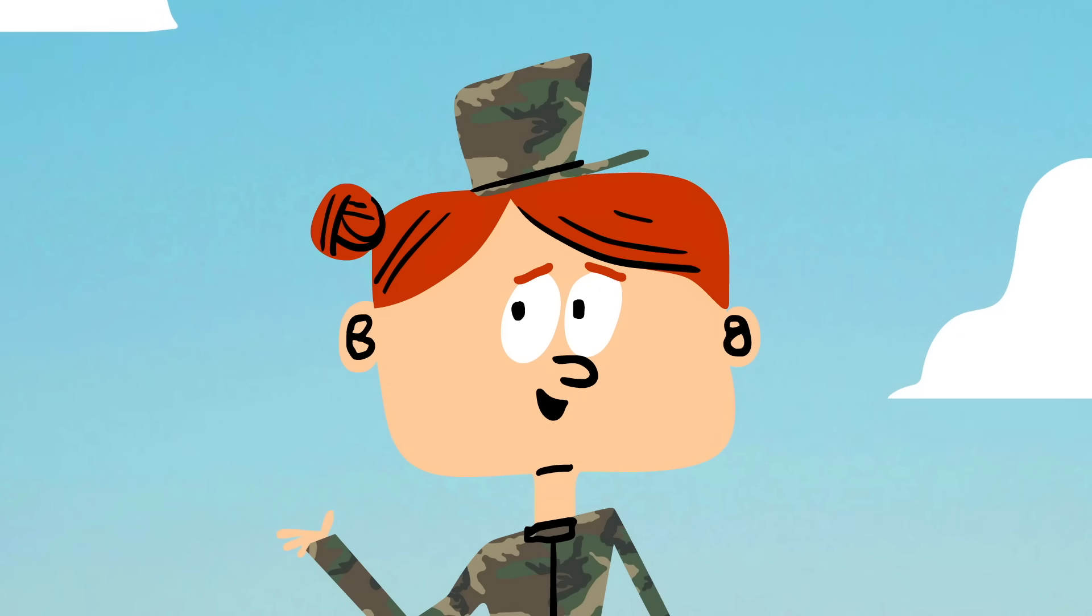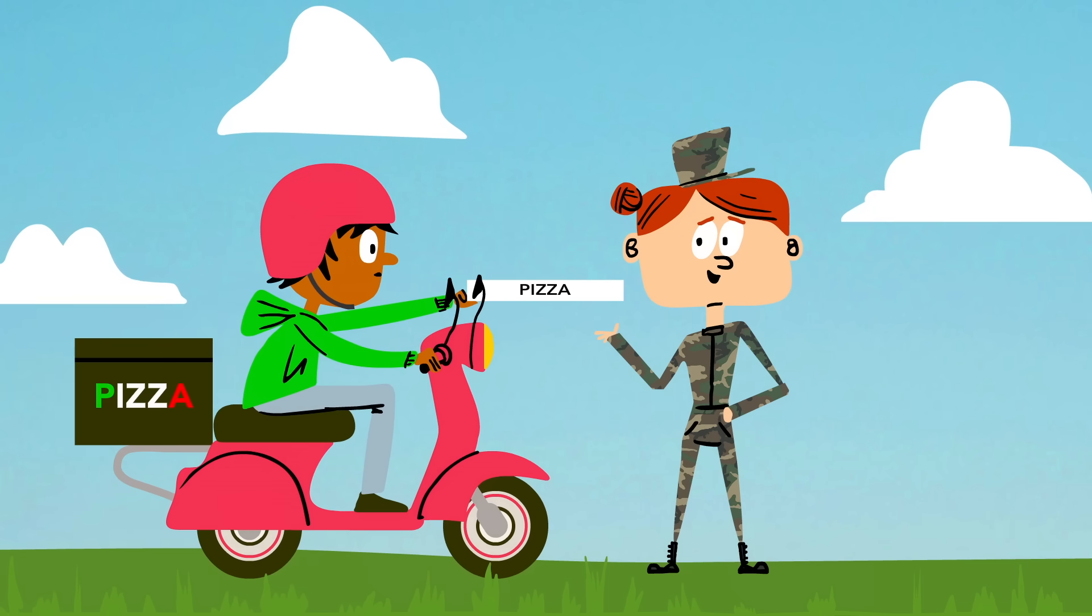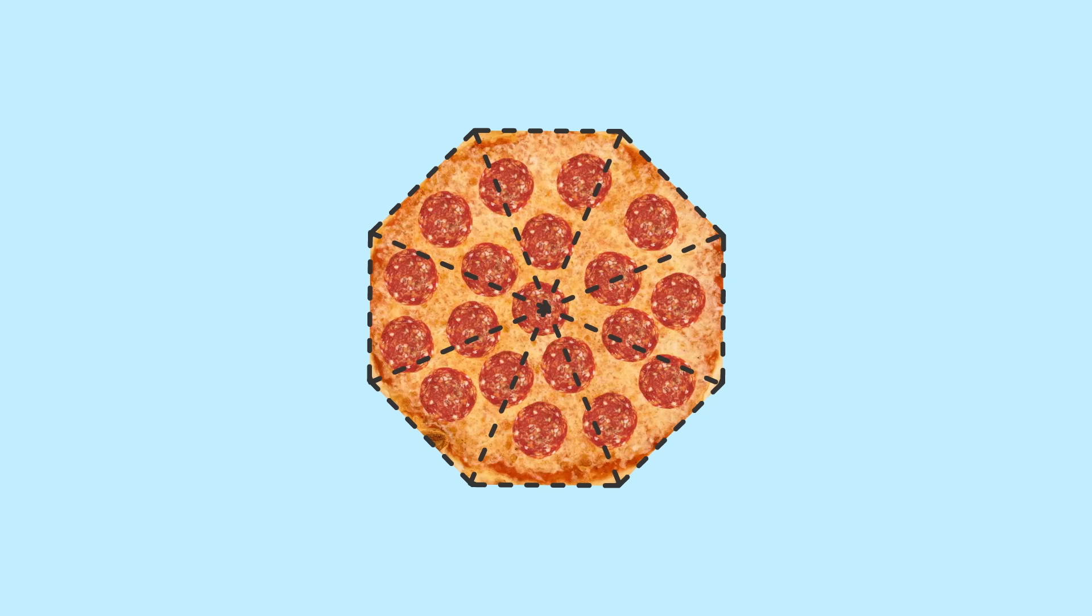But as with so many of life's problems, we can look to pizza for inspiration. Imagine squaring off the outside of a pizza so that instead of a circle, it's an octagon. When we cut it into slices, each of the eight triangles is acute.